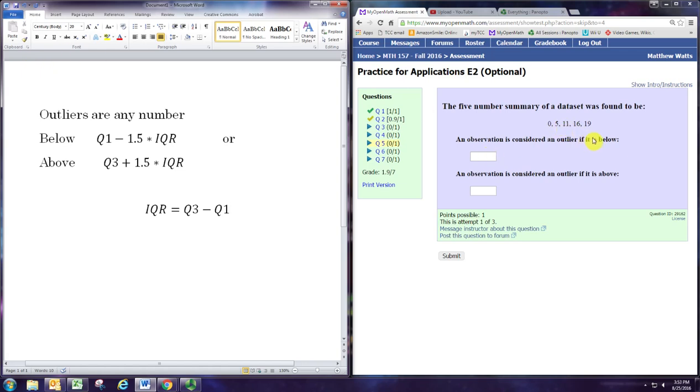The first step is to determine the IQR, or interquartile range, and this is found from the formula that subtracts the first quartile from the third quartile.